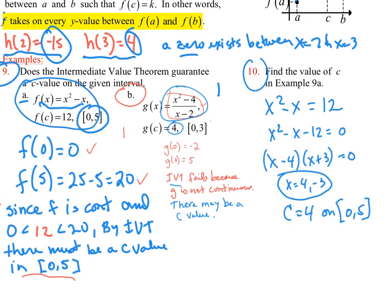Note that we do get two answers here. However, there's only one of them that are on the interval 0 to 5. So we get the c value being 4 on 0 to 5. That's what we wanted.